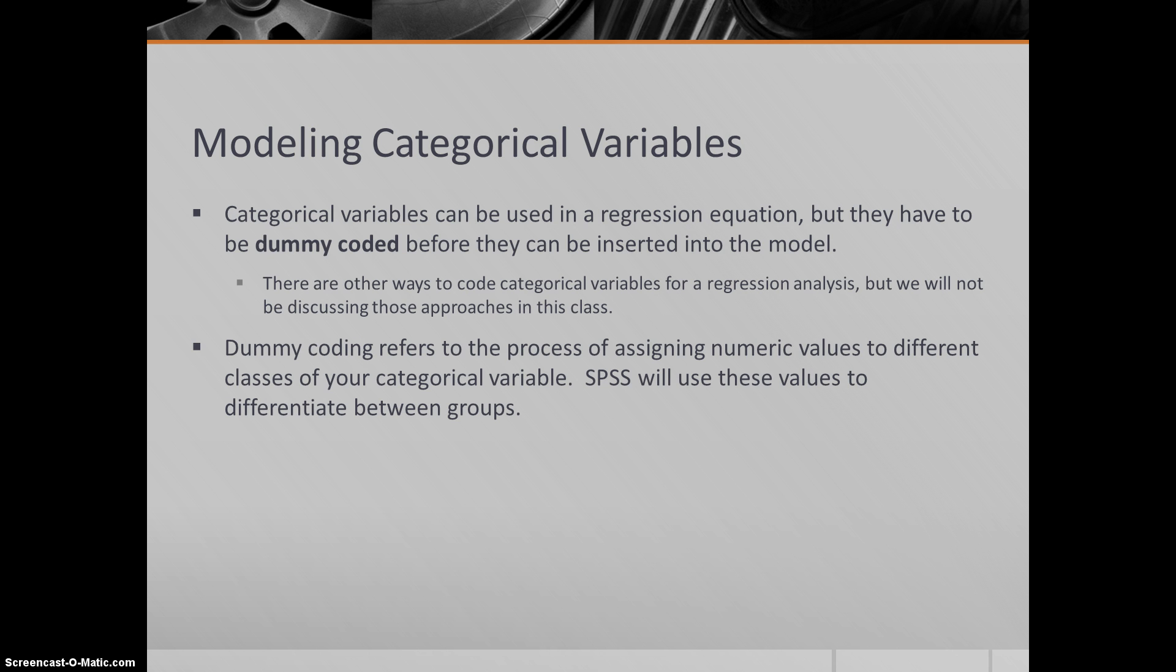Again, they can be used in a regression equation, multiple regression, but they do have to be coded before they can be inserted into the model. Dummy coding refers to the process of assigning numeric values to different classes of your categorical variable. SPSS uses these values to differentiate between groups. I'll explain this in more detail and give you several examples through the classwork, so you can do that for the homework and ultimately for your project. Many of you will be using dummy coding to include categorical variables in your final project. I want to make sure you know how to do that.